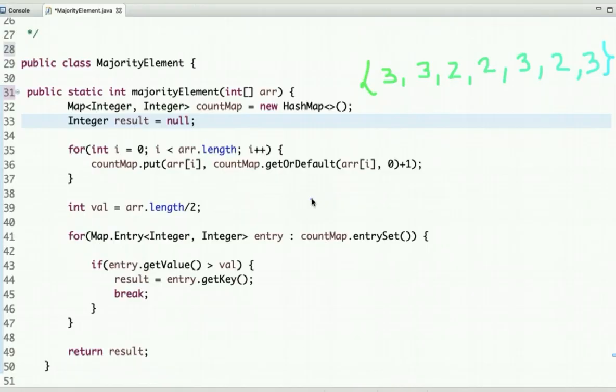To find the majority element in an array, first we need to find all the numbers and their count—how many times each number occurs. Once we know the number and its count, we can easily find the majority element. We need to store the number and its count, and for this we are going to use a HashMap. In the HashMap, we keep the number as a key and its count as a value.